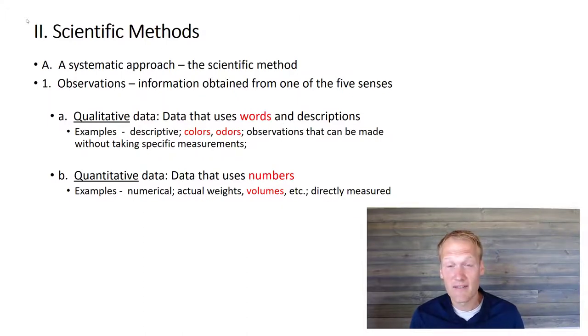Qualitative observations or qualitative data is always going to involve words or descriptions, things like color and odors. Quantitative data is going to use quantities or numbers to tell the story. So a length or a volume or anything that you can directly measure with a device and record with a number would be quantitative data. Both types of data can be helpful depending on what you're observing.